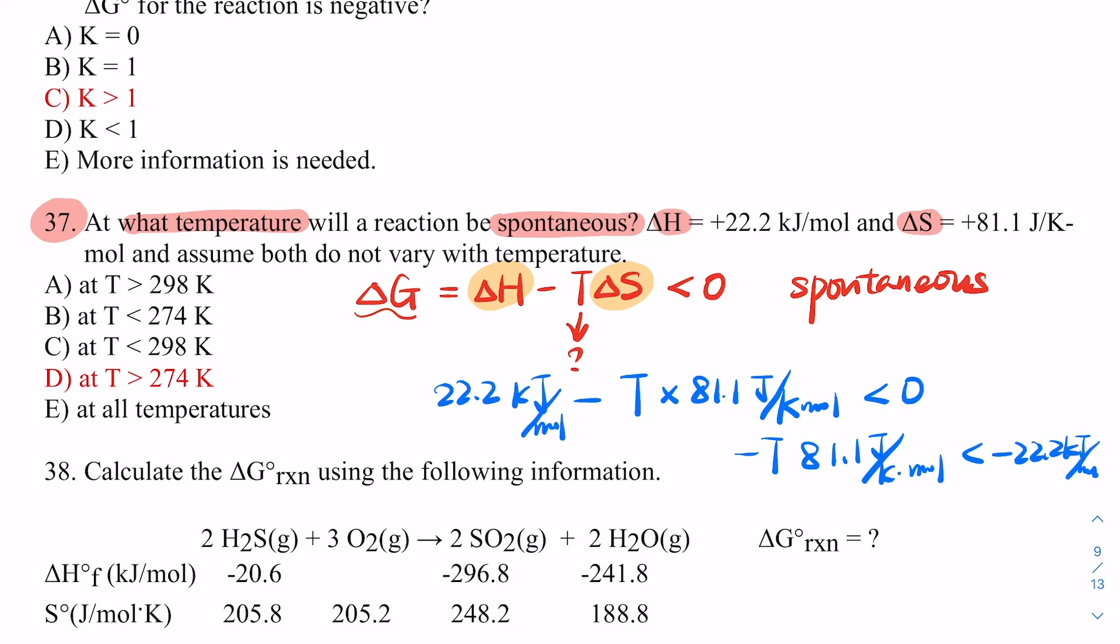I solve for this. You can get T, but remember, one's kilojoules, one's joules. So you have to use 22.2 multiplied by 1,000 to convert the units, then divide it by 81.1 to get temperature. Temperature will need to be bigger than 274 K. So the answer is D.